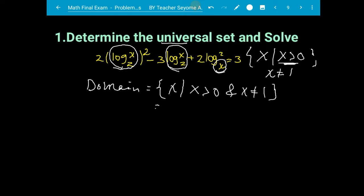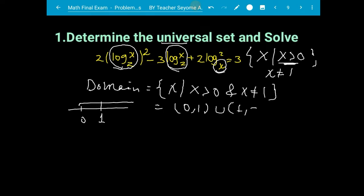On interval form, which is greater than zero — in this case you can remove one — so open interval (0, 1) union open interval (1, infinity).